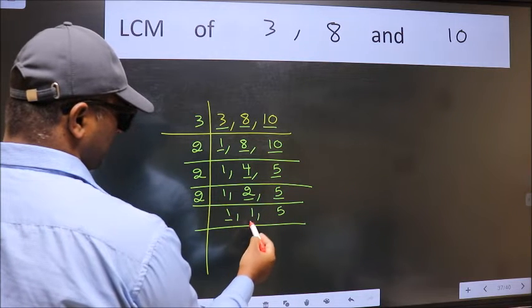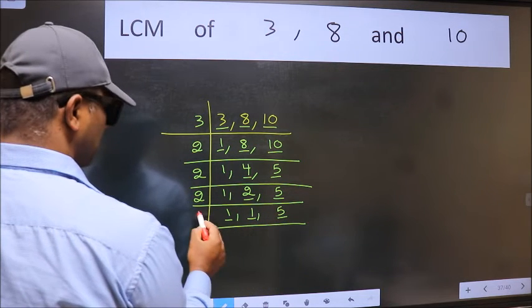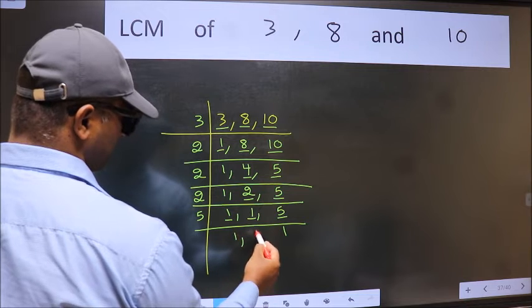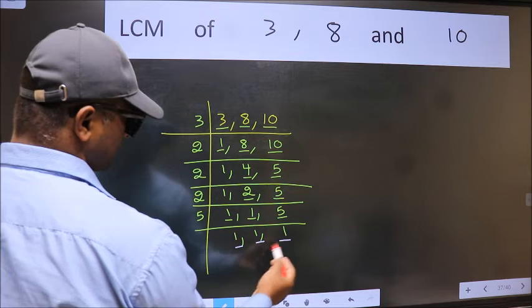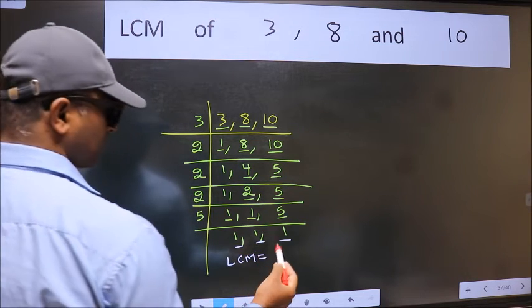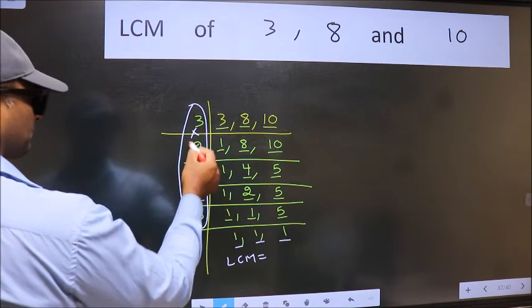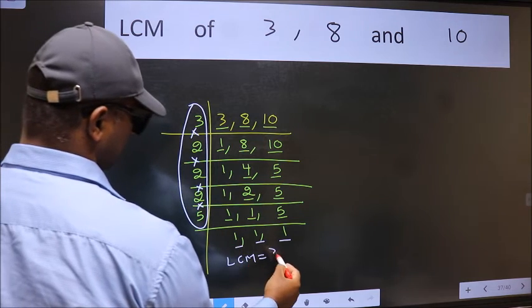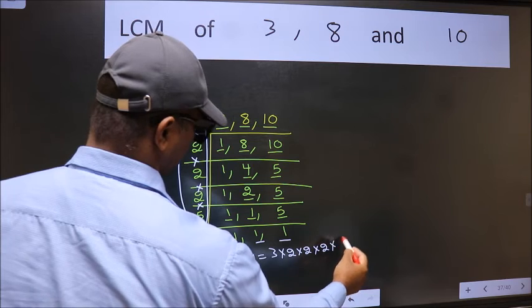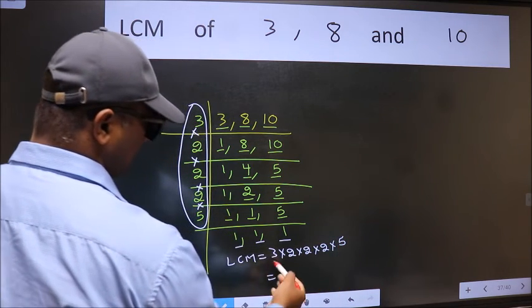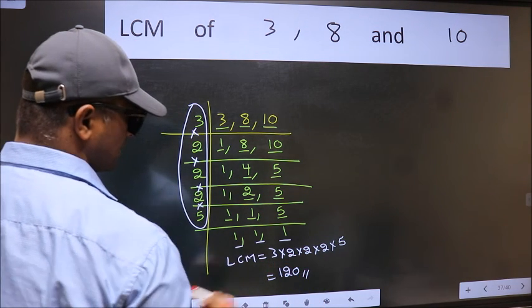Now we got 1 here and here, so focus on the next number 5. 5 is a prime number, so 5 divides 5 once. So we got 1 in all 3 places. So our LCM is the product of these numbers: 3 × 2 × 2 × 2 × 2 × 5. When we multiply these numbers, we get 120 as our LCM.